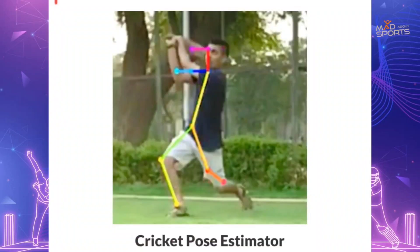Analysts can identify not just stats but also body posture. The ICC invented a particular data metric where analysts can identify ball speed, the swing of the ball, impact points, and body posture. For example, a player's head falling below the off stump — that transfers the weight of the body incorrectly. These factors can be measured through data. The analyst perceives this data, gives it to the coaches, and the coaches then correct that particular body posture of the player.